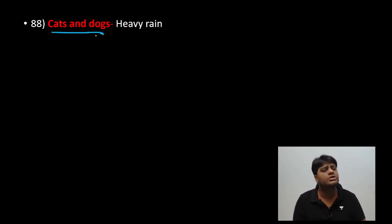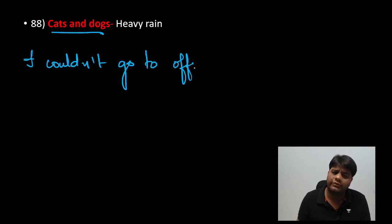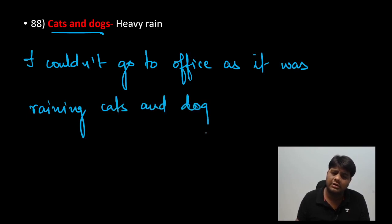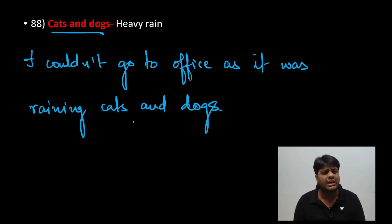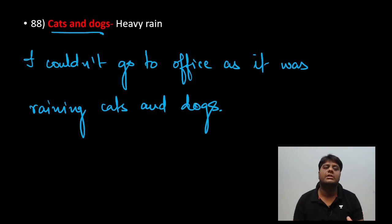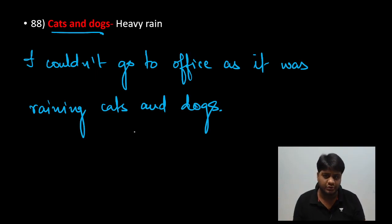Idiom 88: 'raining cats and dogs.' This is used only for heavy rain. For example: 'I could not go to office as it was raining cats and dogs.' Cats and dogs never stop fighting, so this refers to heavy, never-ending rain. That is why 'cats and dogs' is used for very heavy rainfall.